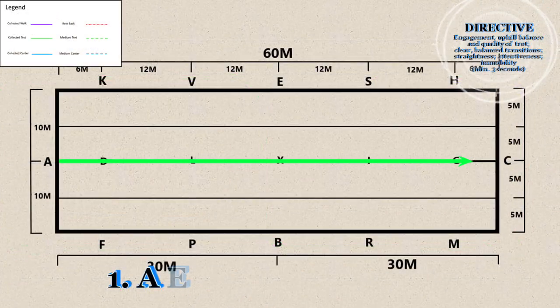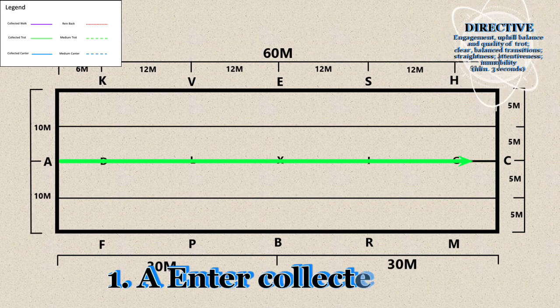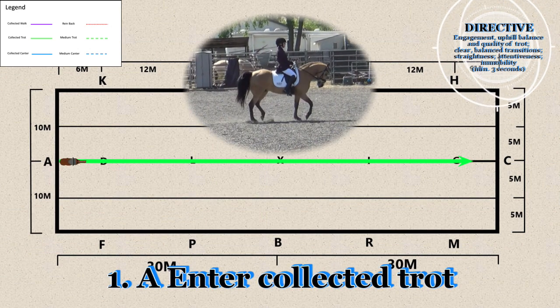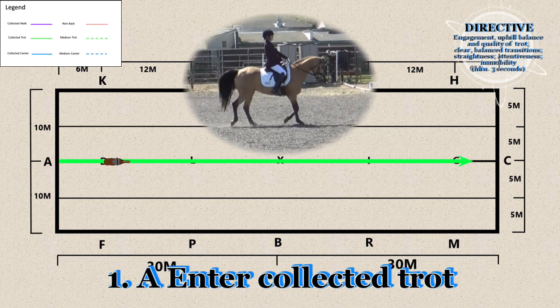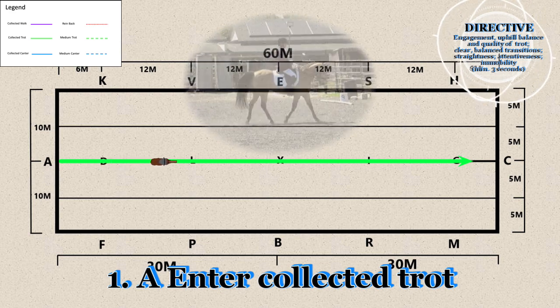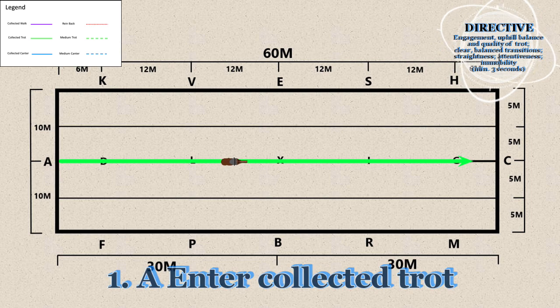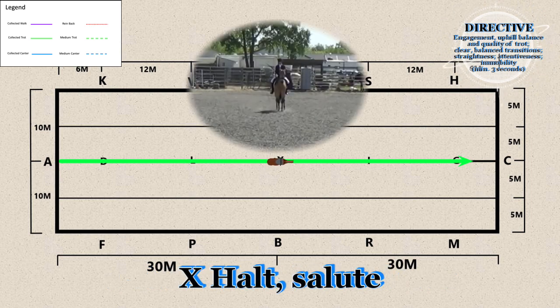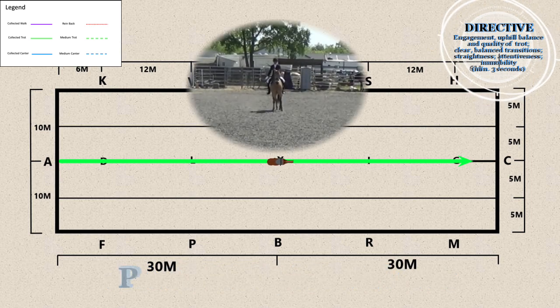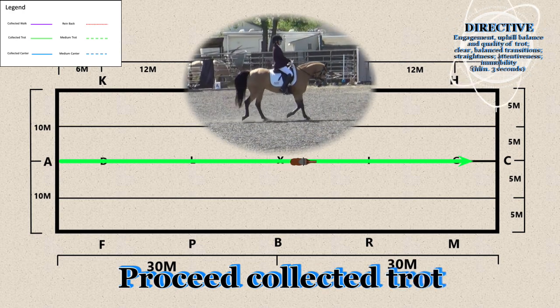1. A - Enter collected trot. X - Halt, salute, proceed collected trot.